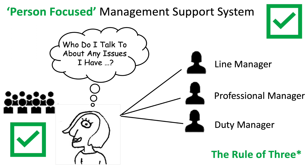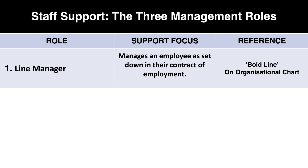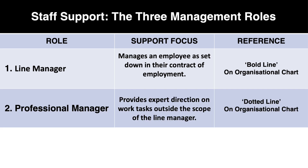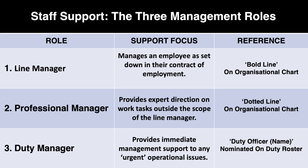The line manager's role is to manage that person according to the terms of their employment contract, represented by a bold straight line on an organizational chart. The professional manager provides expert input on areas outside the scope of the line manager — typically inclusion or specialized curriculum inputs — represented by a dotted line on the chart. The duty manager, or duty officer, is available to immediately respond to any urgent issues the teacher may have, and they're represented in a roster system shared across the leadership team so everyone always knows who's on duty.